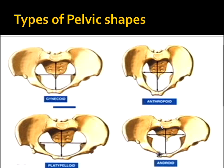The android pelvis is triangular in shape — this is the typical male pelvis. The anthropoid pelvis is anteroposteriorly oval, meaning the anterior-posterior diameter is greater than the transverse diameter. The platypeloid pelvis is transversely oval, meaning the transverse diameter is greater than the anterior-posterior diameter.